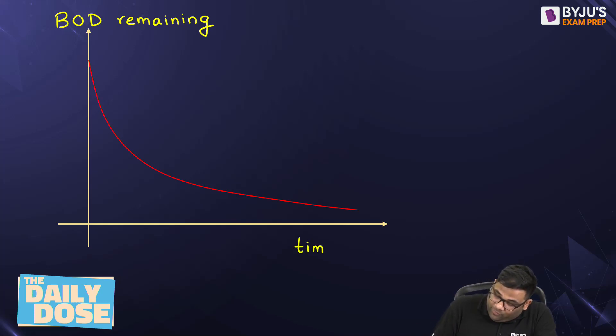And it is an exponential curve. BOD remaining Lt will be equal to the initial or the ultimate BOD, L0 e to the power minus k into t. You can see it is an exponential curve which is decreasing, minus k into t.